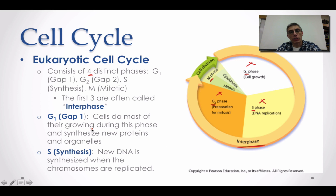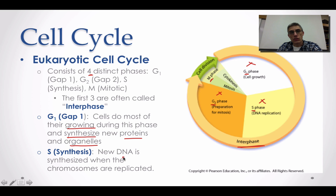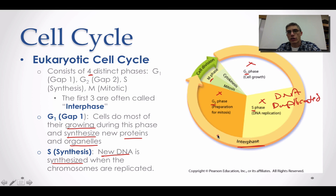Gap 1 is the part of the cell cycle where most of the growth occurs. In addition to growing, the cell also synthesizes new proteins and organelles necessary for survival. In the S phase, new DNA is synthesized or made — this is where DNA duplication occurs, indicating the cell is getting ready to divide.